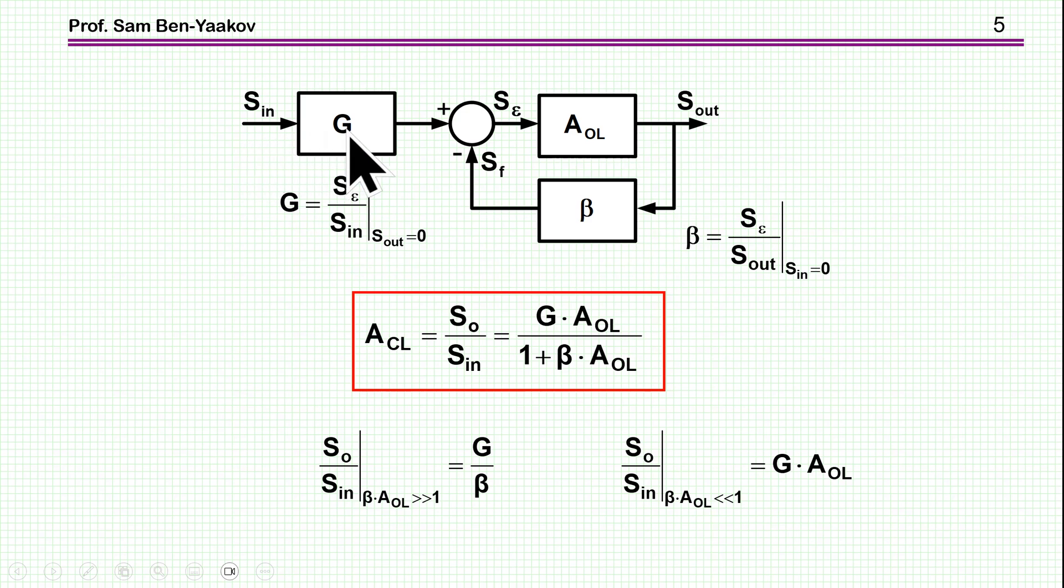Again, it looks simple, but as you'll see, it makes all the difference in the world. So now, in this case, when beta A is larger than 1, then 1 drops, and we cancel out A open loop, and we get G over beta, and not 1 over beta. And when the loop gain is smaller than 1, this drops, and we get G A open loop, that is, we get this path here from G A open loop. There's no feedback when beta A is smaller than 1. So this is the idea of the generalized feedback system.